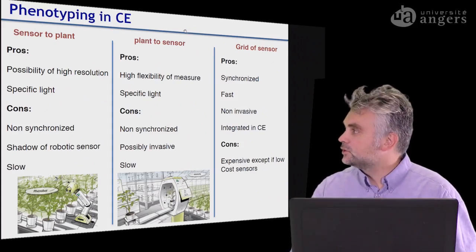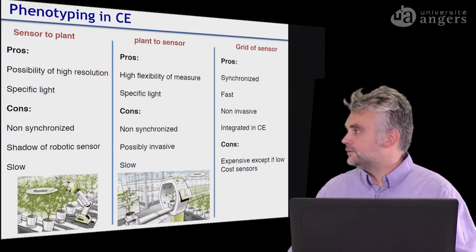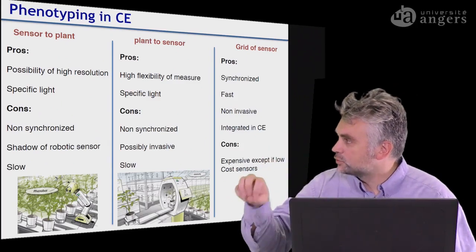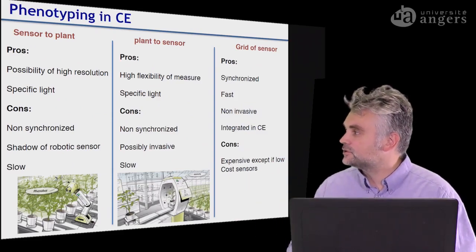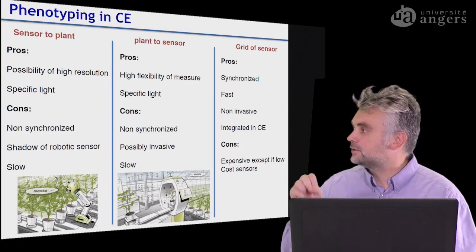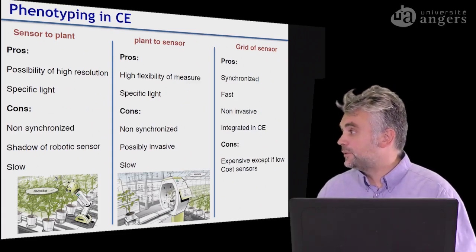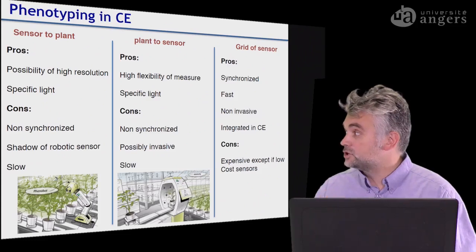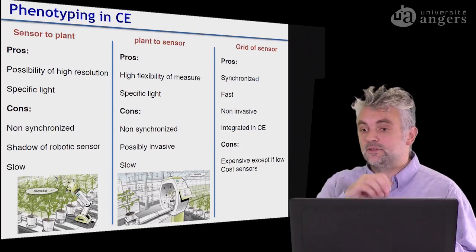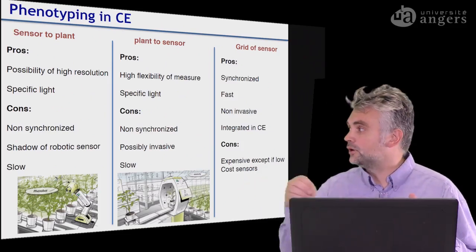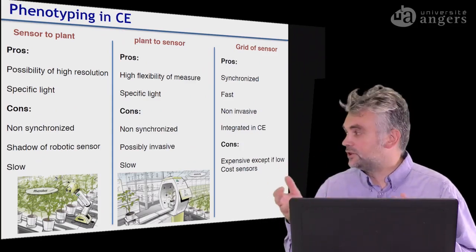The first approach corresponds to bringing the sensor to the plant. The pros are the possibility, since you bring the sensors close to the plant, to have very high resolution, to be as close as possible to the plant, and to have a spatial selectivity which can be as small as you want. Also, you can choose the specific light you want to do the imaging. However, some pitfalls: the measurement will not be synchronized with the life of the plant. If you have thousands of plants and your measurement takes minutes, it will take a very long time and all measurements will not be taken at the same biological stage of each plant.